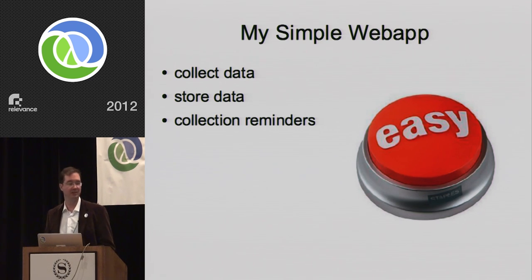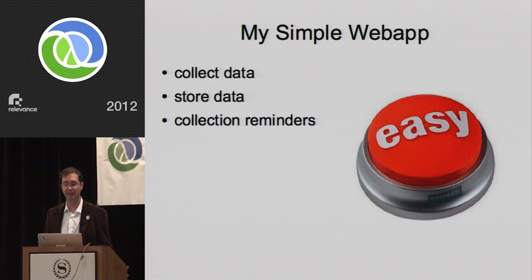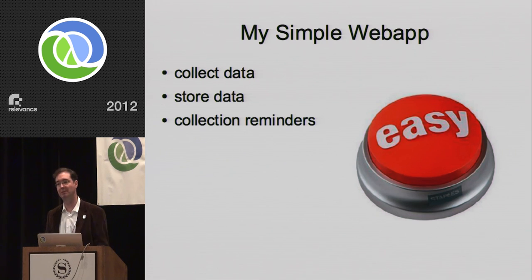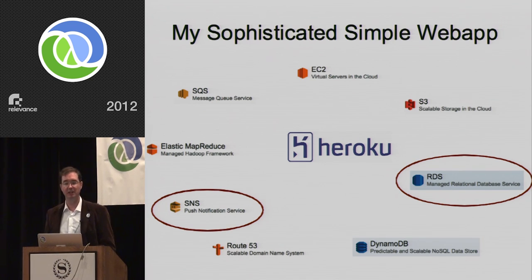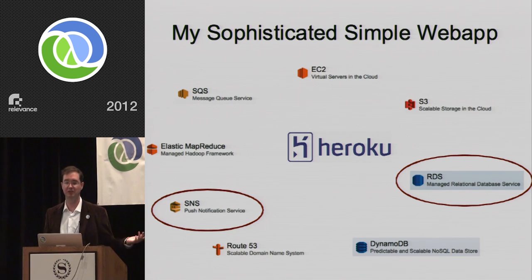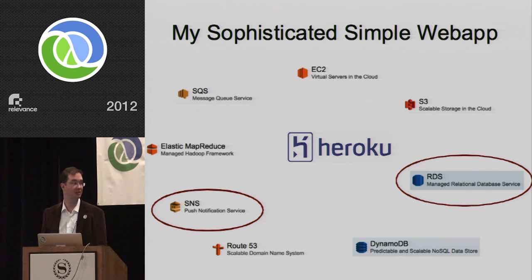For my happiness web app, I want to collect data, store data, and send out collection reminders throughout the day — both text messages and email — for randomized samples. This means the simple web app is suddenly more sophisticated: you have to deal with a database as well as a mail or messaging service, two more services I do not want to manage.